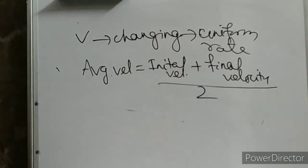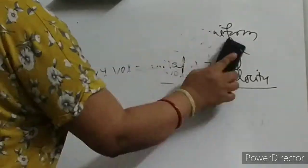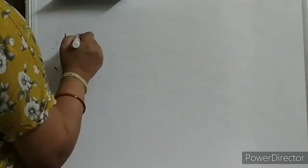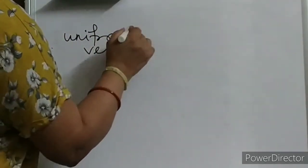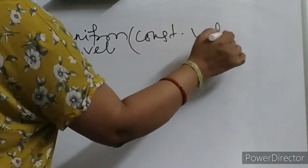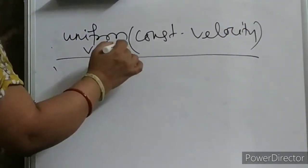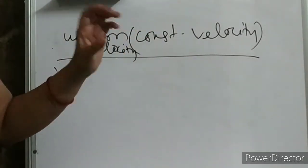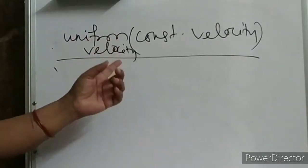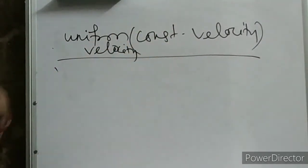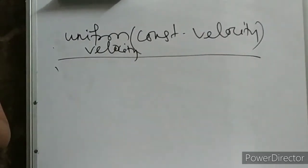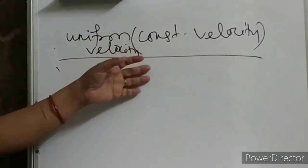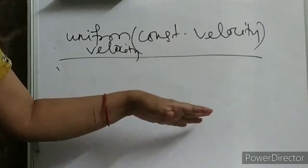Now we will understand what is uniform velocity or constant velocity, as we have studied in the case of speed also. What is uniform velocity? If an object is traveling in a specified direction in a straight line, it will move the same distance in every second — then only we say the velocity is uniform. A body will have uniform velocity if it travels in a particular direction in a straight line and moves equal distances in equal intervals of time.